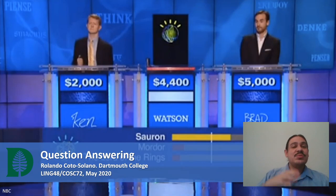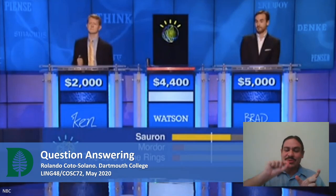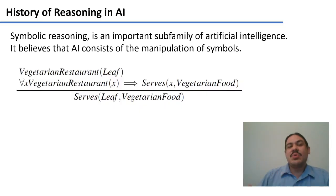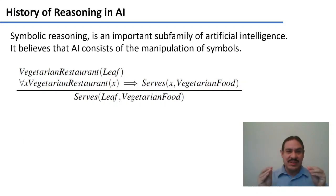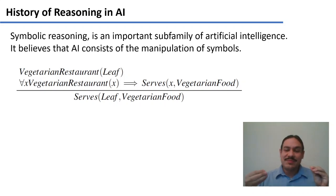In week six we looked at a kind of question answering system that used BERT, where you gave it as input the question and then it told you the index of the text where you have the answer. These systems work with a different principle. There's a sub-family of artificial intelligence called symbolic reasoning. You're familiar with deep learning, which we studied in week six, which believes that AI is meant to find the non-linear functions that connect an input with an output.